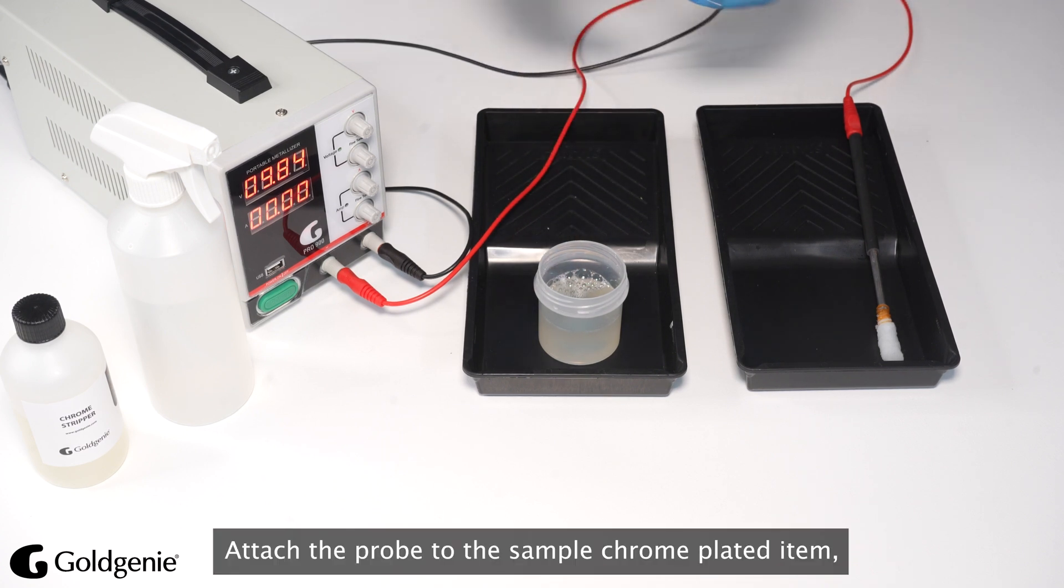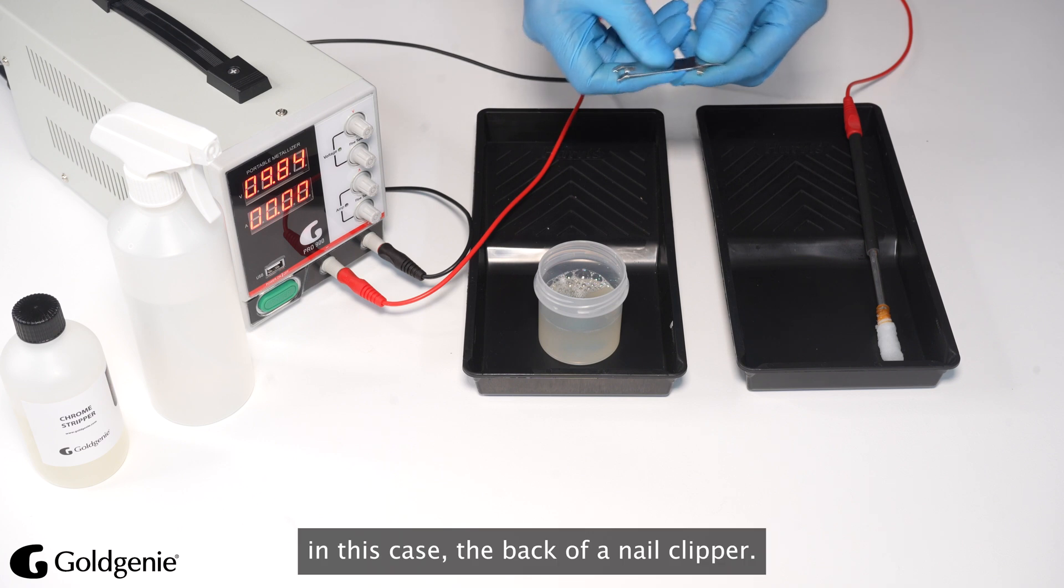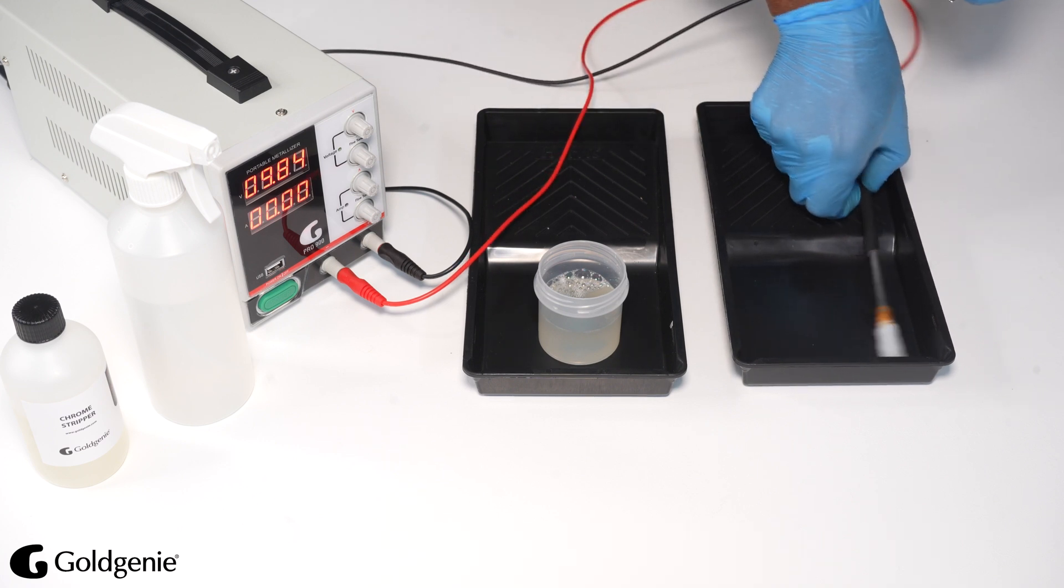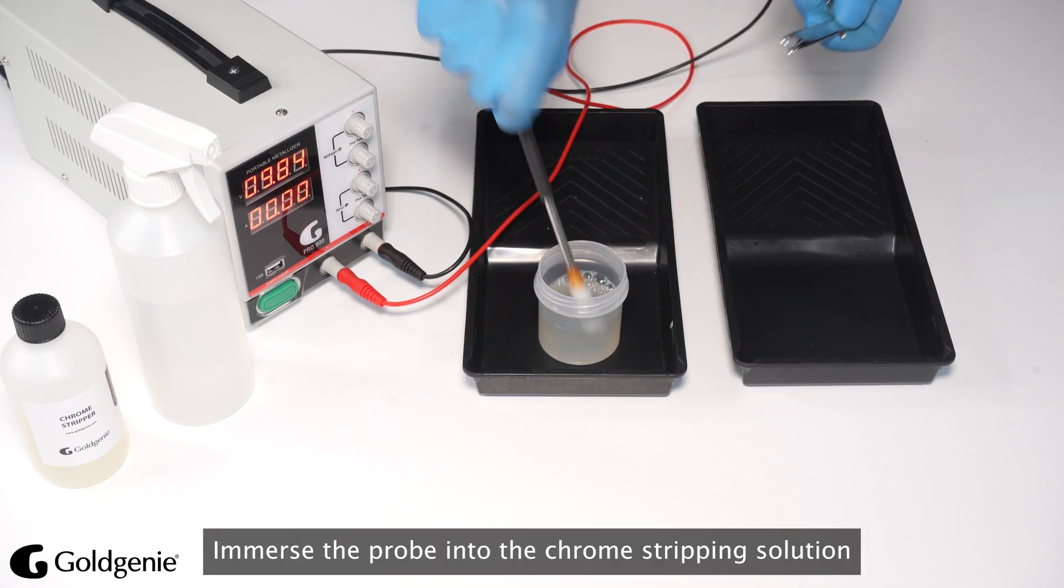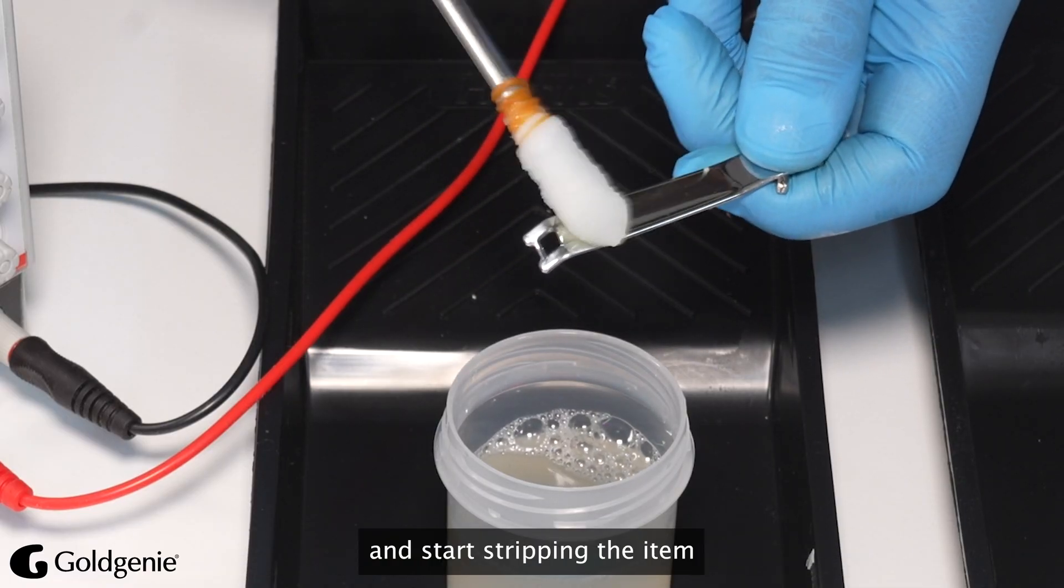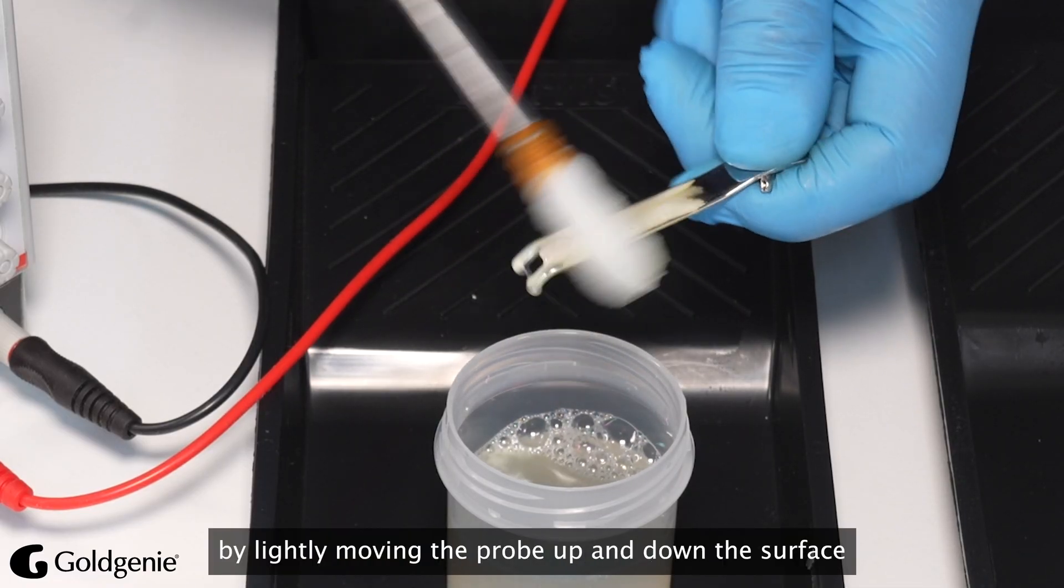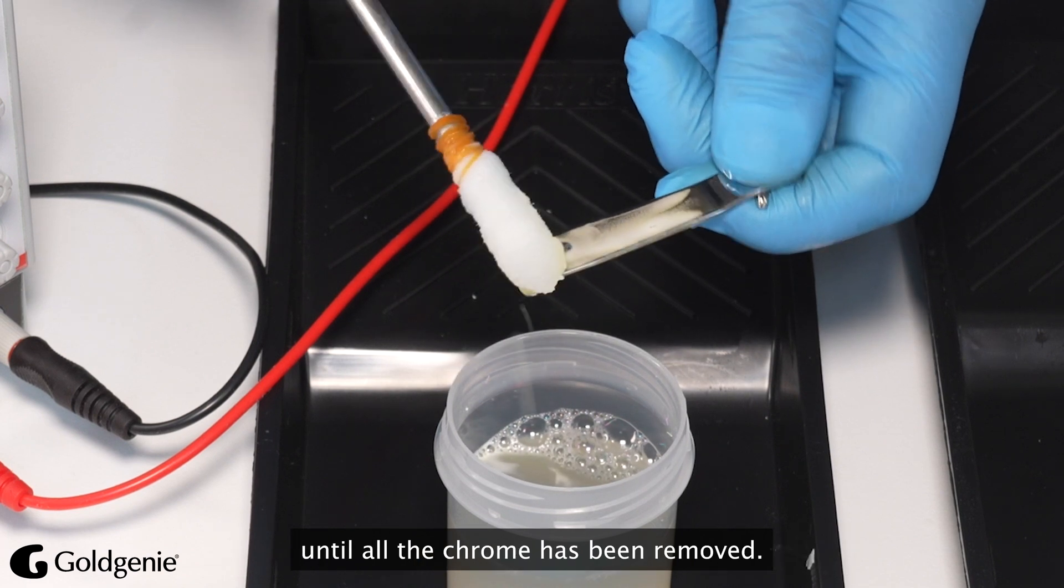Attach the probe to the sample chrome plated item, in this case the back of a nail clipper. Immerse the probe into the chrome stripping solution and start stripping the item by lightly moving the probe up and down the surface until all the chrome has been removed.